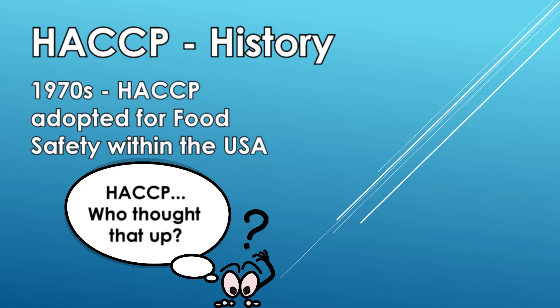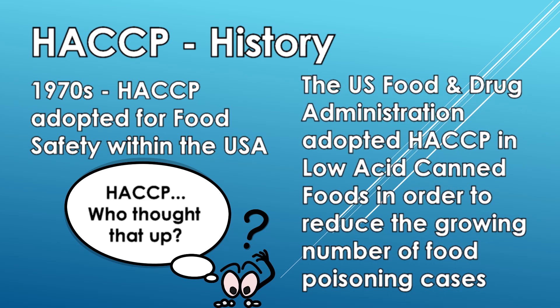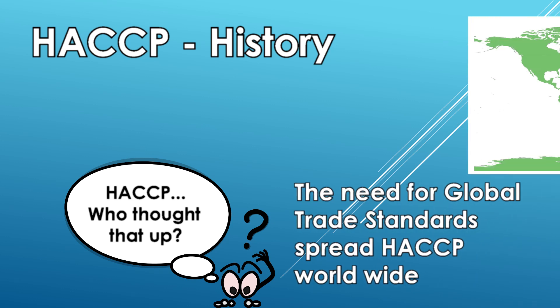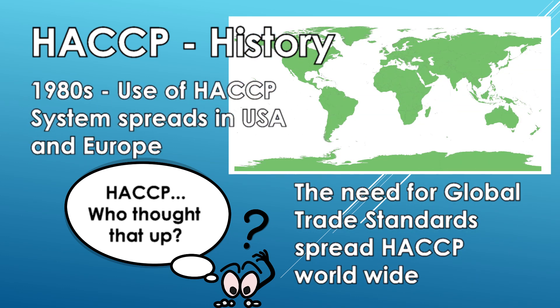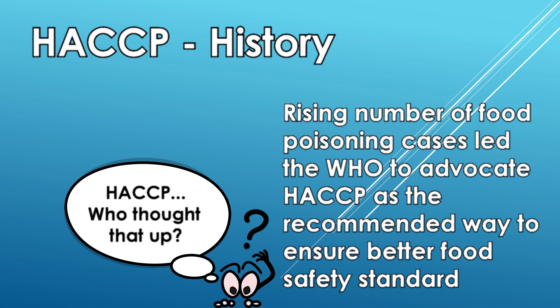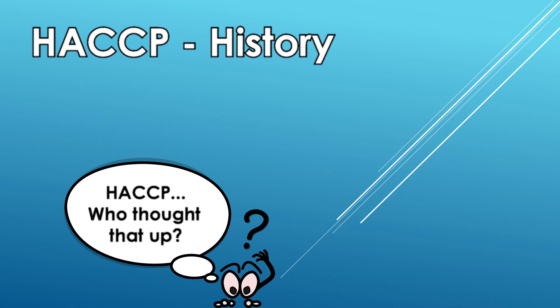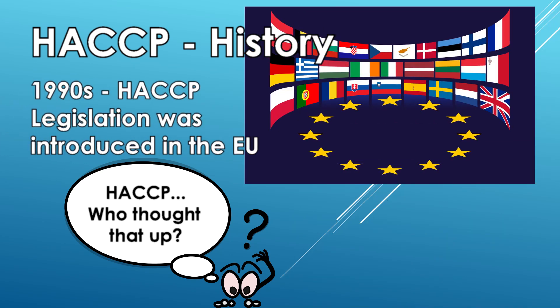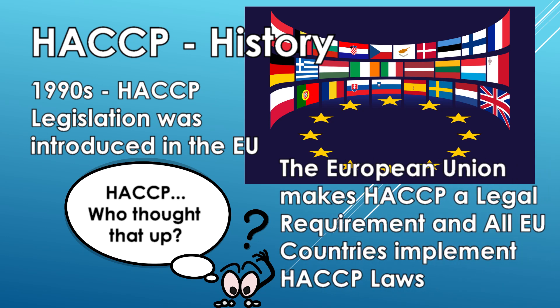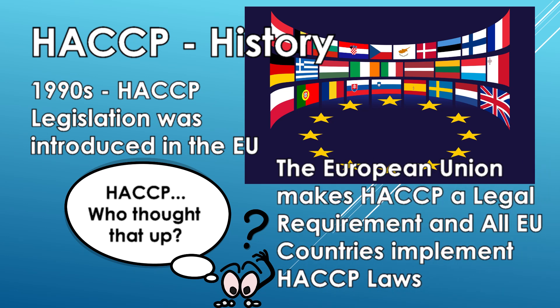In the 70s, the U.S. Food and Drug Administration adopted HACCP in low-acid canned foods in order to reduce the growing number of food poisoning cases. The need for global trade standards worldwide in the 80s saw the HACCP system spread in the USA and Europe. Rising number of food poisoning cases in the 1990s led the World Health Organization to advocate HACCP as a recommended way to ensure better food safety standards. The European Union introduced legislation in the 90s that made HACCP a legal requirement on all European Union countries.